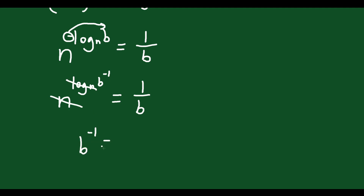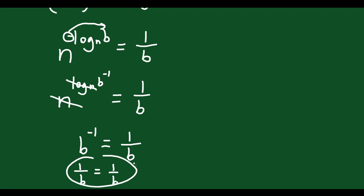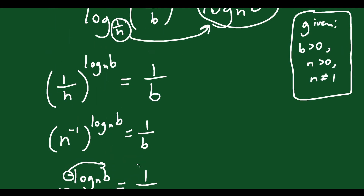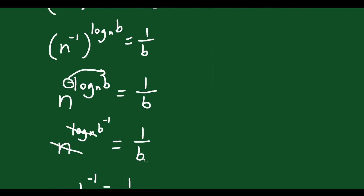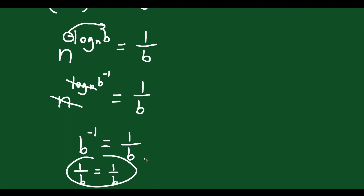You're left with b to the negative 1 equals 1/b — which is true, since 1/b equals 1/b. That's our proof. We just proved that the original statement is correct. There are other ways to do this, and I'd encourage you to try different methods and see if yours works as well.